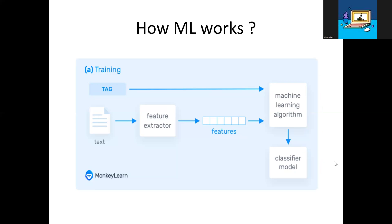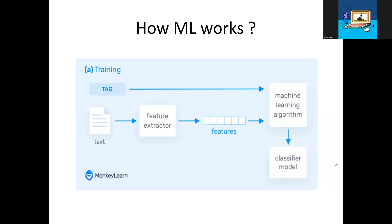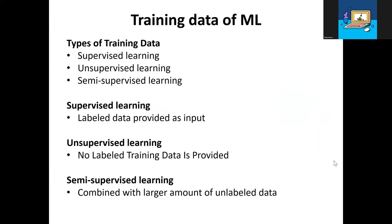How ML works involves two phases: training and prediction. In training, for the given text, we extract features and use those features to train a machine learning algorithm to classify the model. In prediction, for a given text, we extract features, classify which category it belongs to, and tag it. So the two key steps are: one is training, and the second one is prediction.